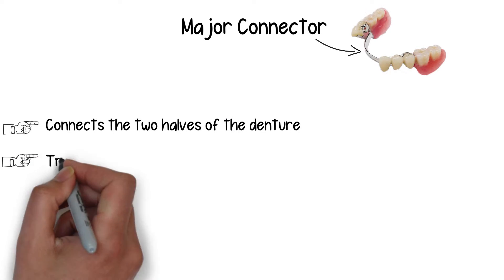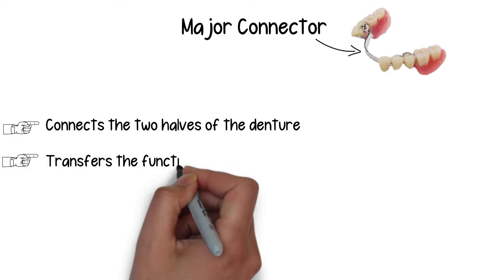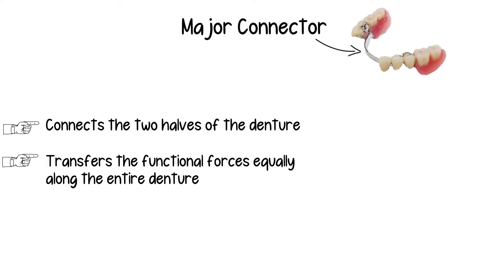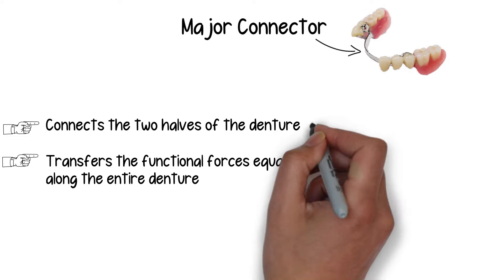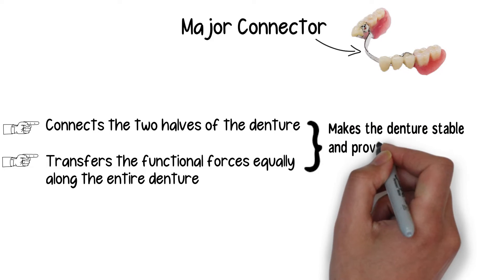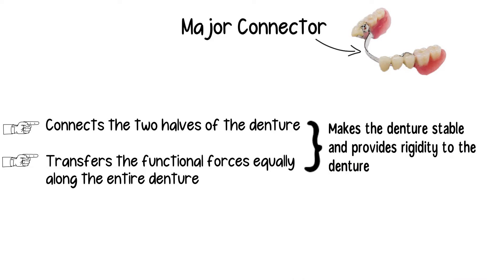The major connector acts as a bridge between the two sides, and in being the connection between the two halves it essentially transfers the functional forces — such as the forces of mastication applied on the artificial teeth and the denture base — distributing those forces equally along the entire arch rather than concentrating them on any one side, which would otherwise create instability in the design.